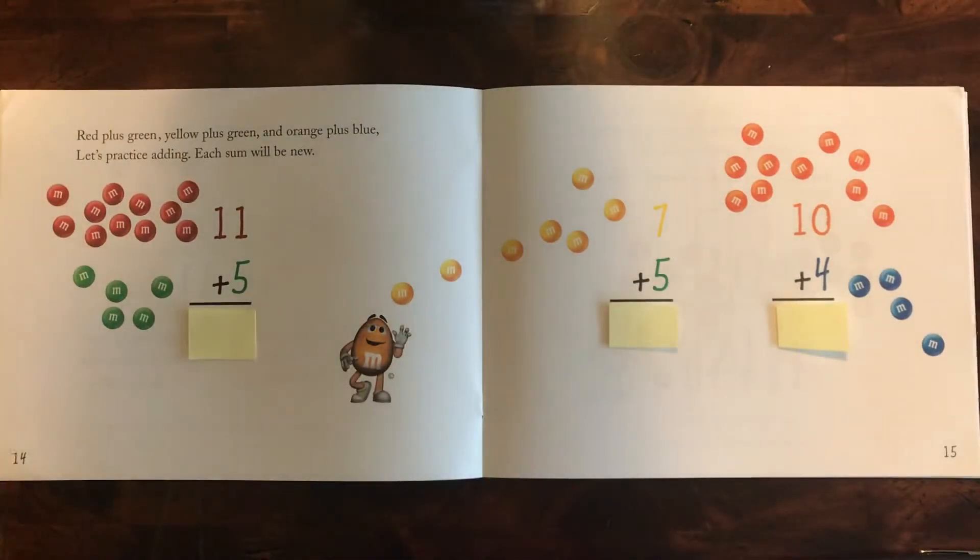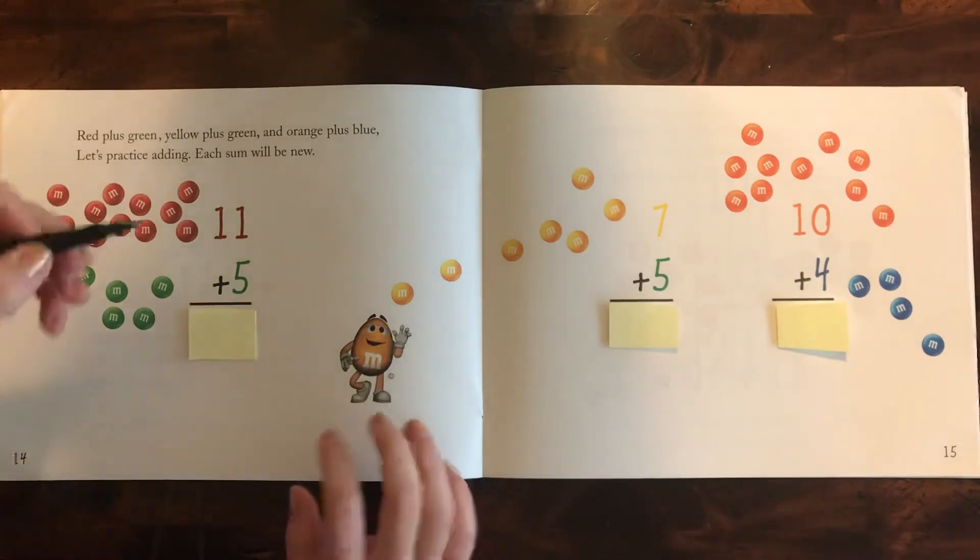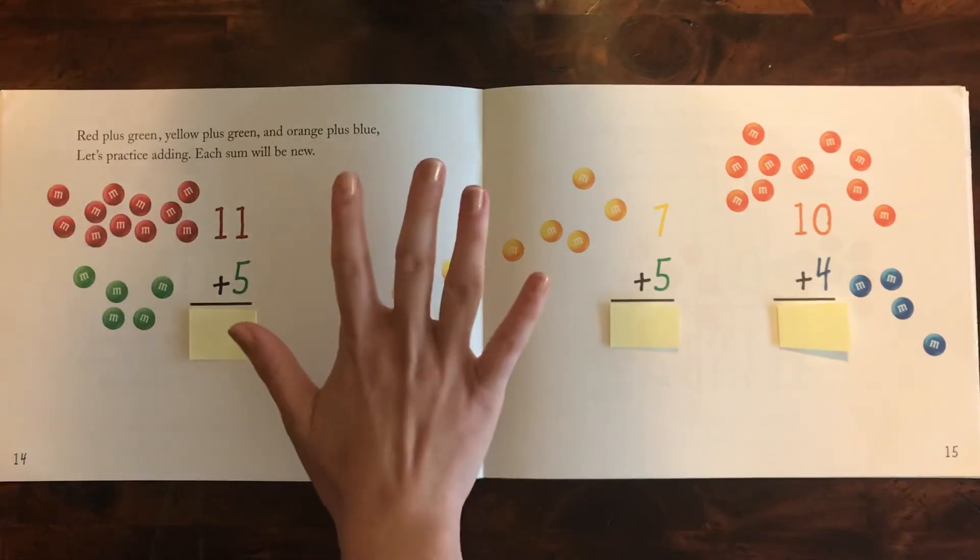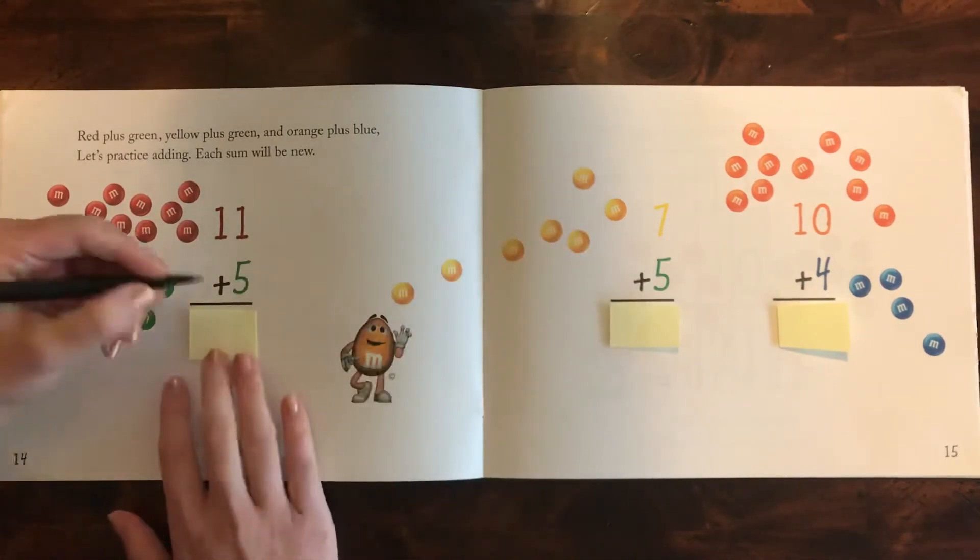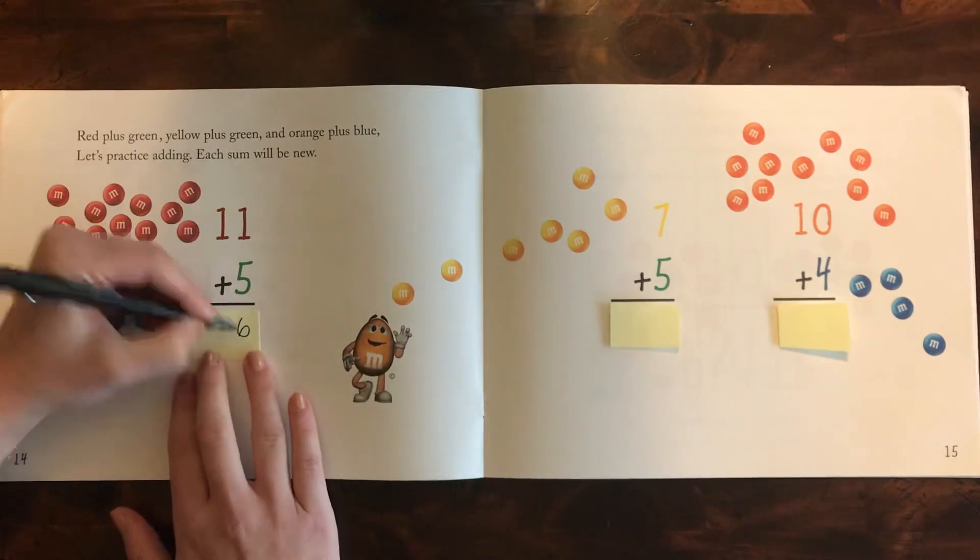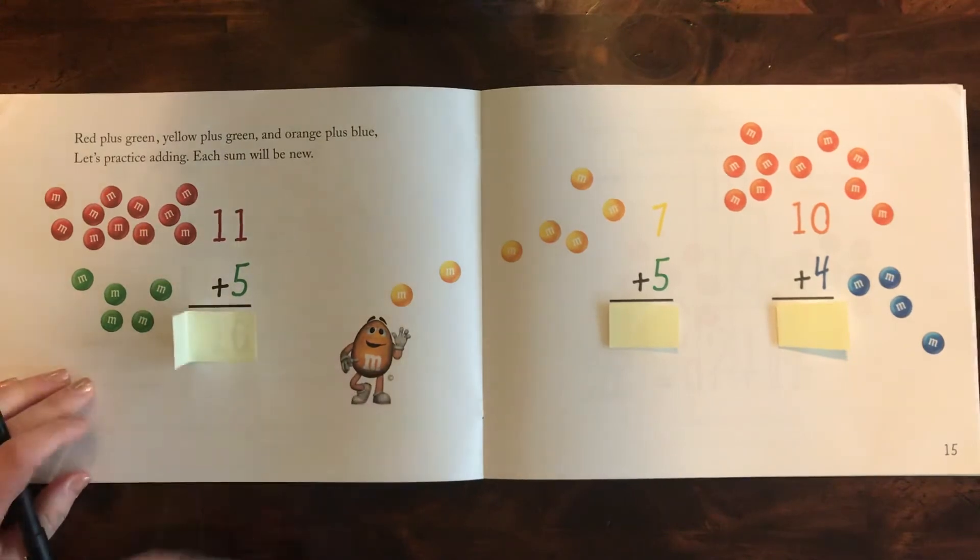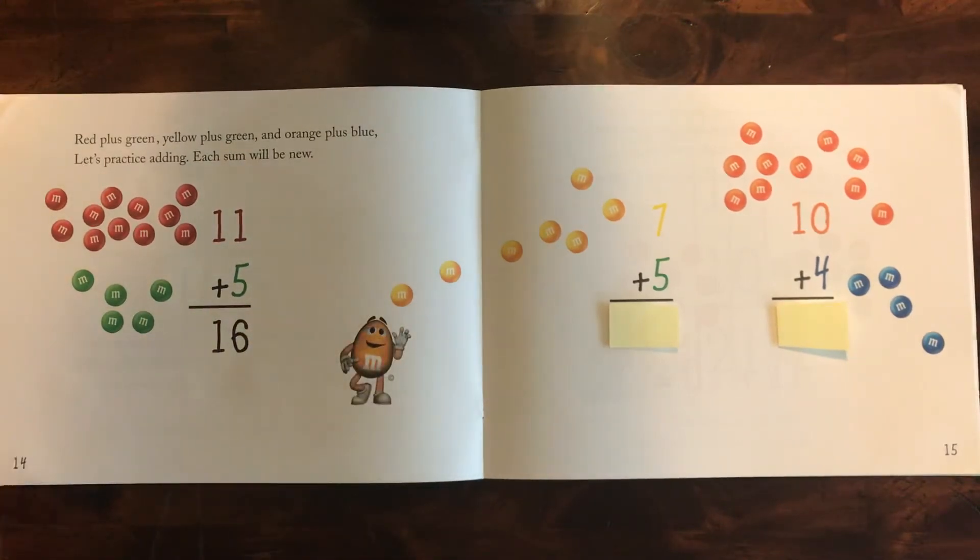Red plus green, yellow plus green, and orange plus blue. Let's practice adding. Each sum will be new. So you can get out a piece of paper and try this with me if you'd like. We're going to start with 11 plus 5. So we have the 1 on the top plus the 5 on the bottom. So 5 plus 1 more is 6. So we're going to put a 6 right there. And then the 1 doesn't have anything underneath so it goes right there. Let's see if we were right. Yep.